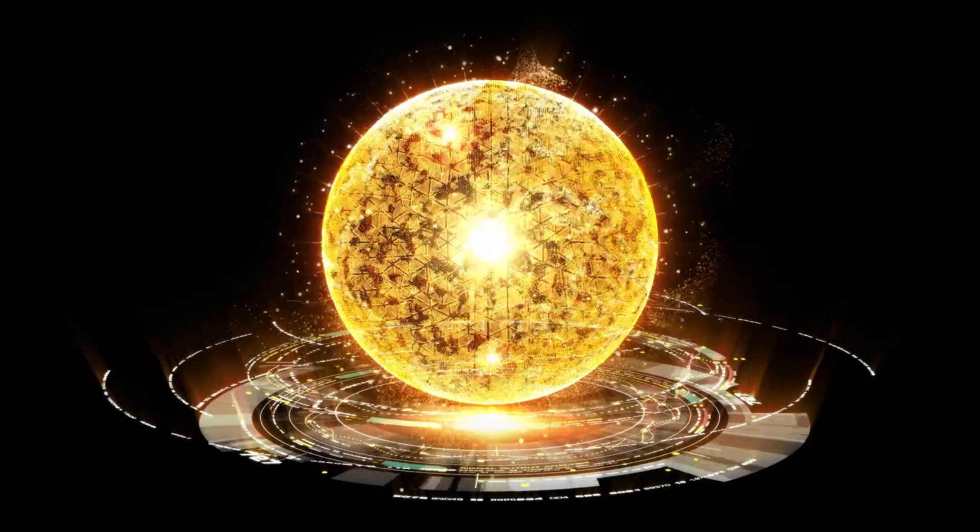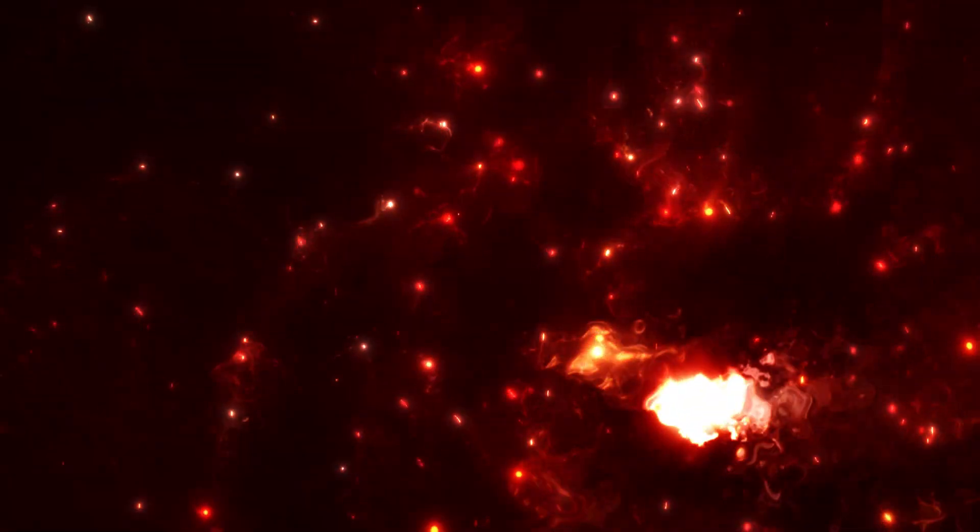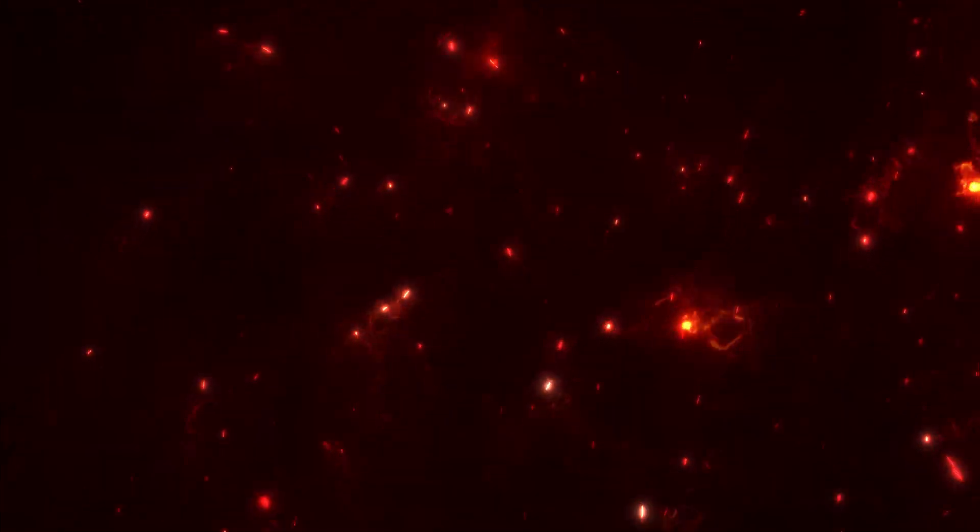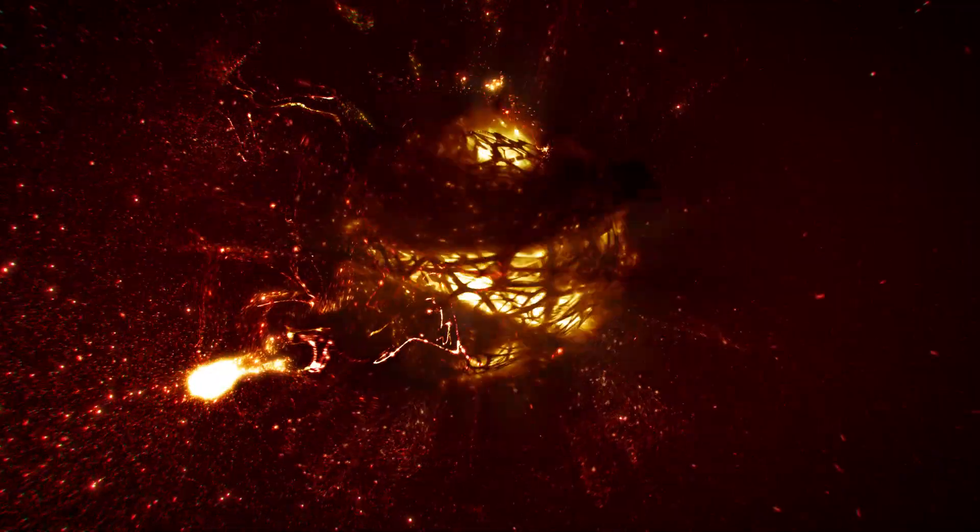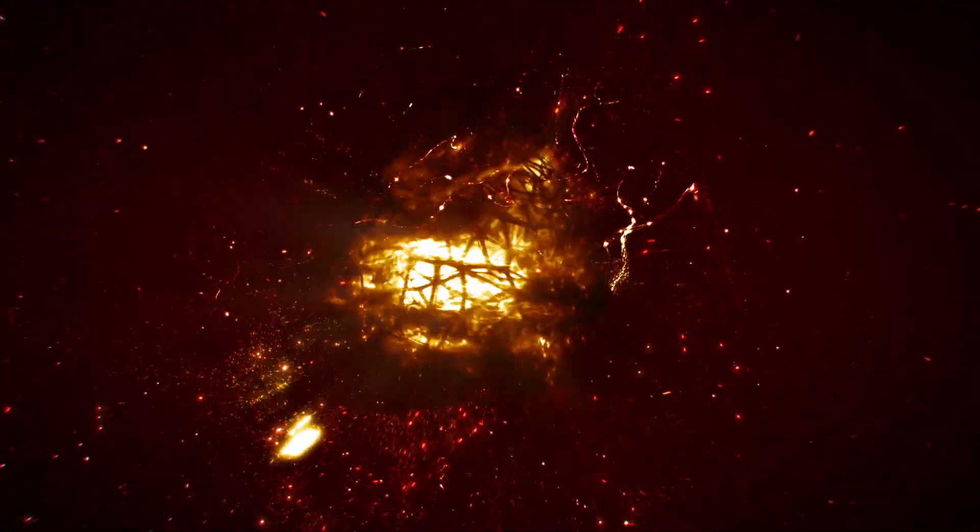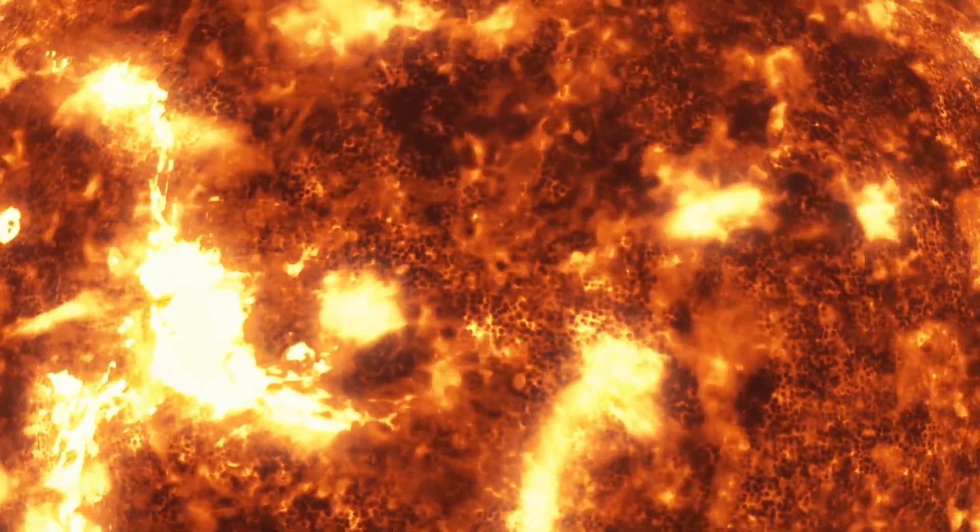So the way the sun burns is by taking hydrogen, which is the simplest element in the universe, and just assembling helium, which is the stuff you get in party balloons, which is the next simplest. And when you do that, you release energy. And that's what the sun's doing. It's burning 600 million tonnes of hydrogen every second. And at that rate, it's got about another four or five billion years to go.